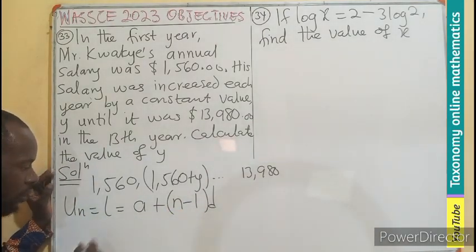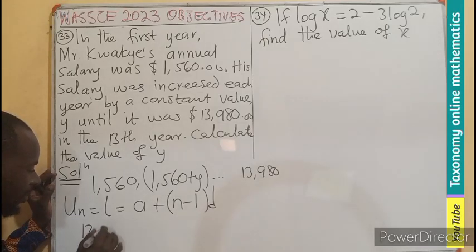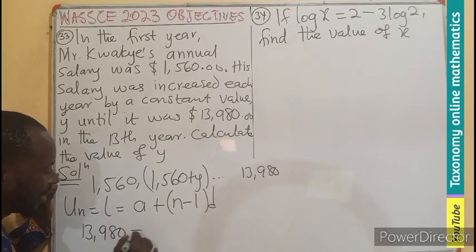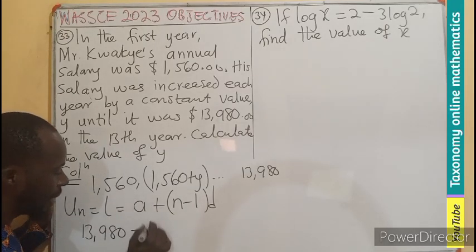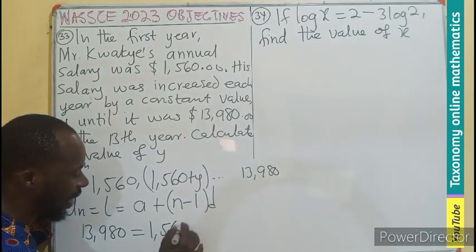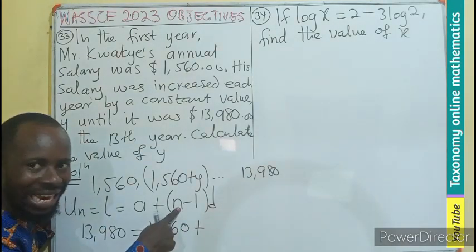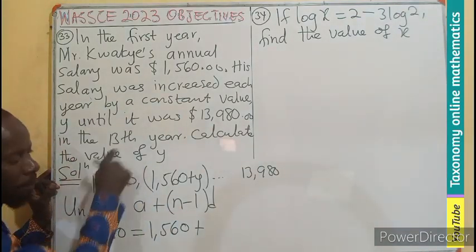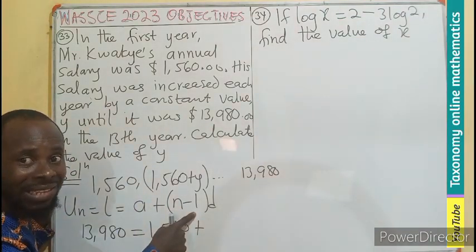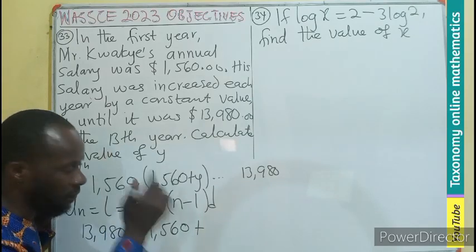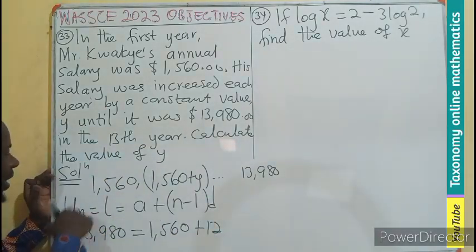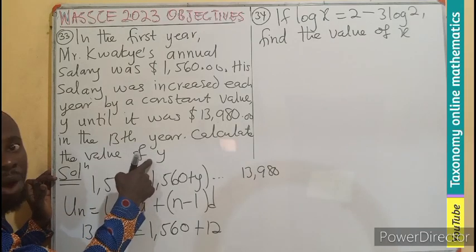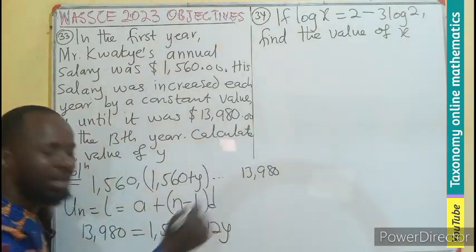I can also use this. So now I'll be having 13,980 = a, first term 1,560, plus n, which is the 30th term. 30th term minus 1, that would be 30 - 1, that would be 29. So 29 times d. What is the d? The common difference is the y.